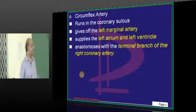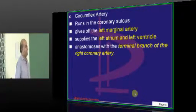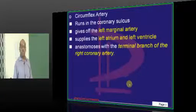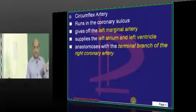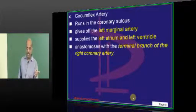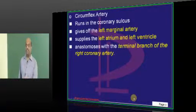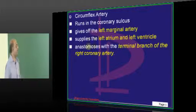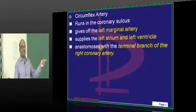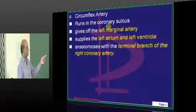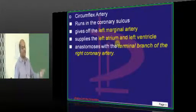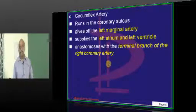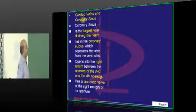The circumflex artery is the other major branch of the left coronary artery. It gives rise to the left marginal artery — whereas the marginal artery on the right side is given by the right coronary. The circumflex branch supplies the left atrium and left ventricle, and it anastomoses with the terminal branch of the right coronary artery.